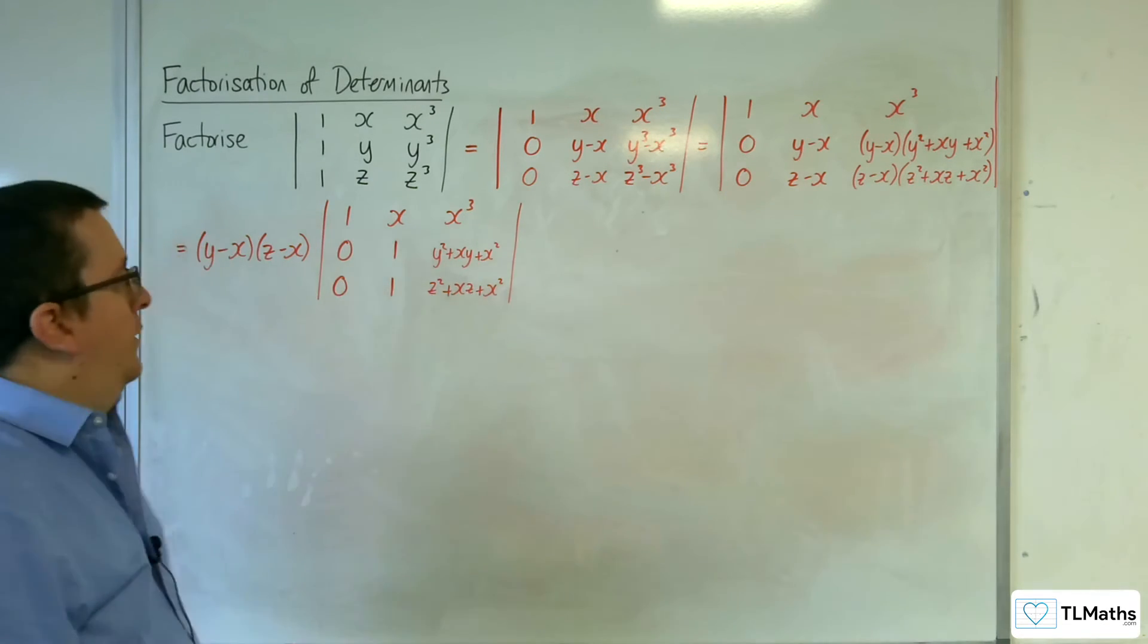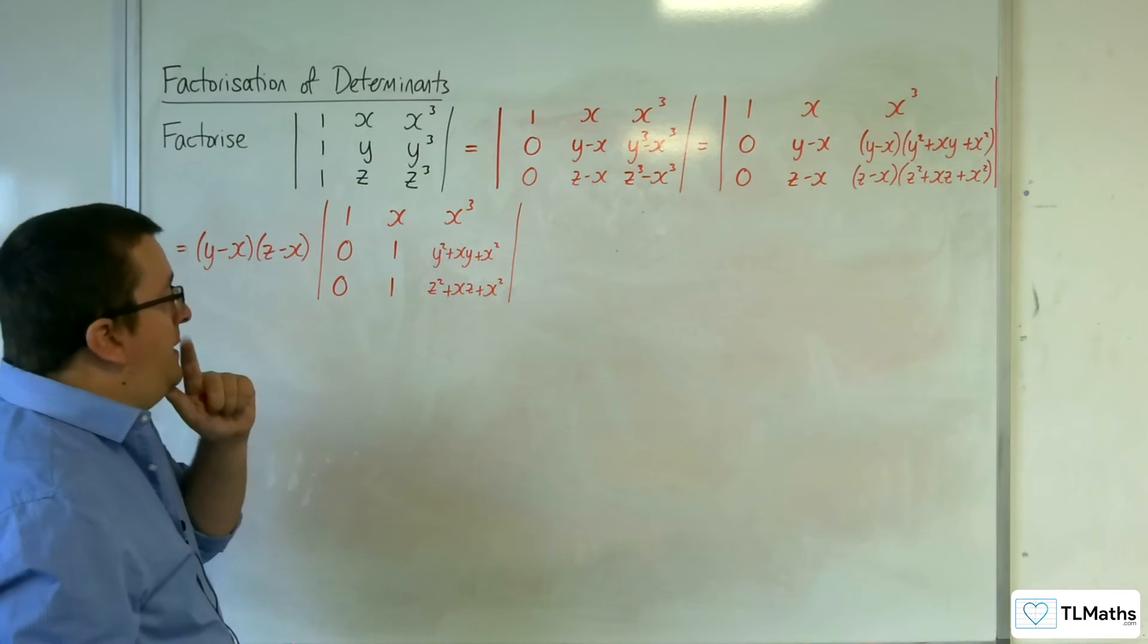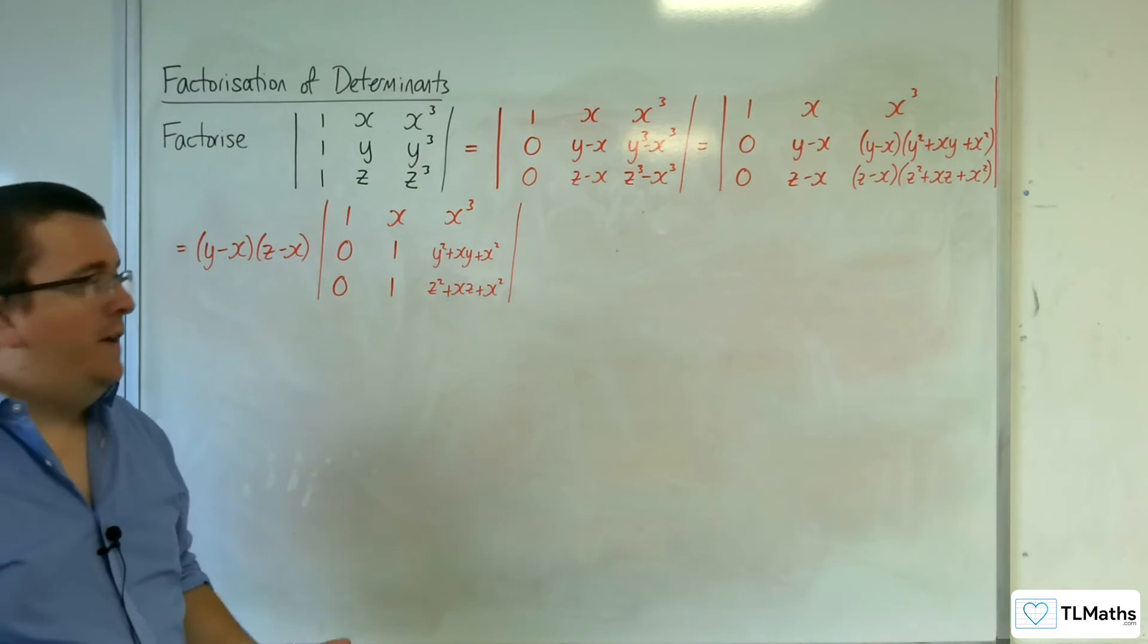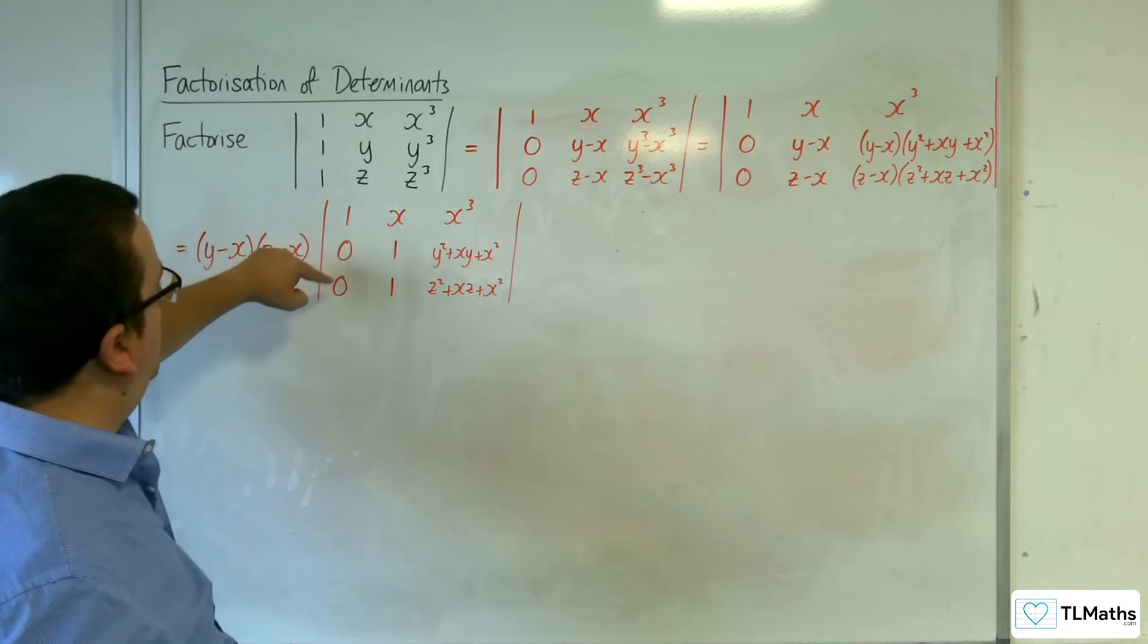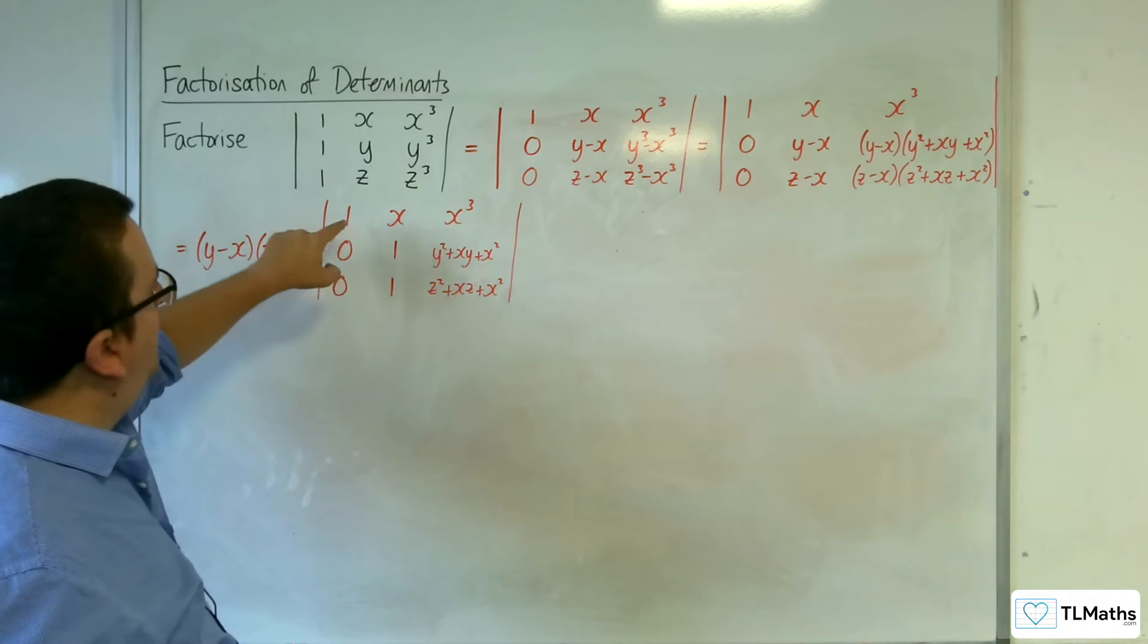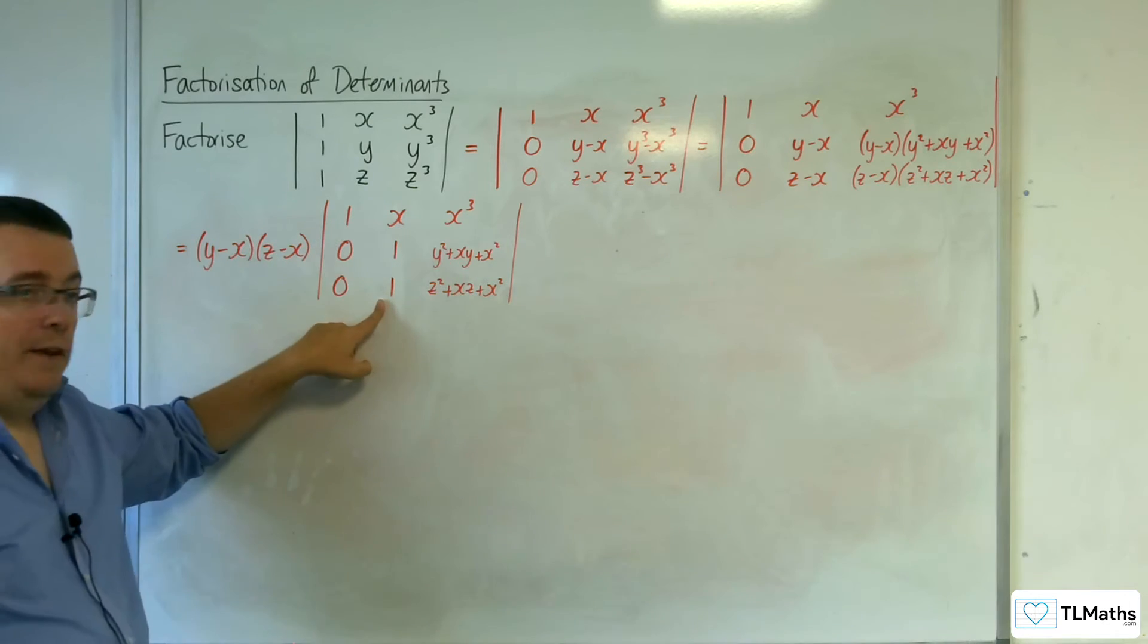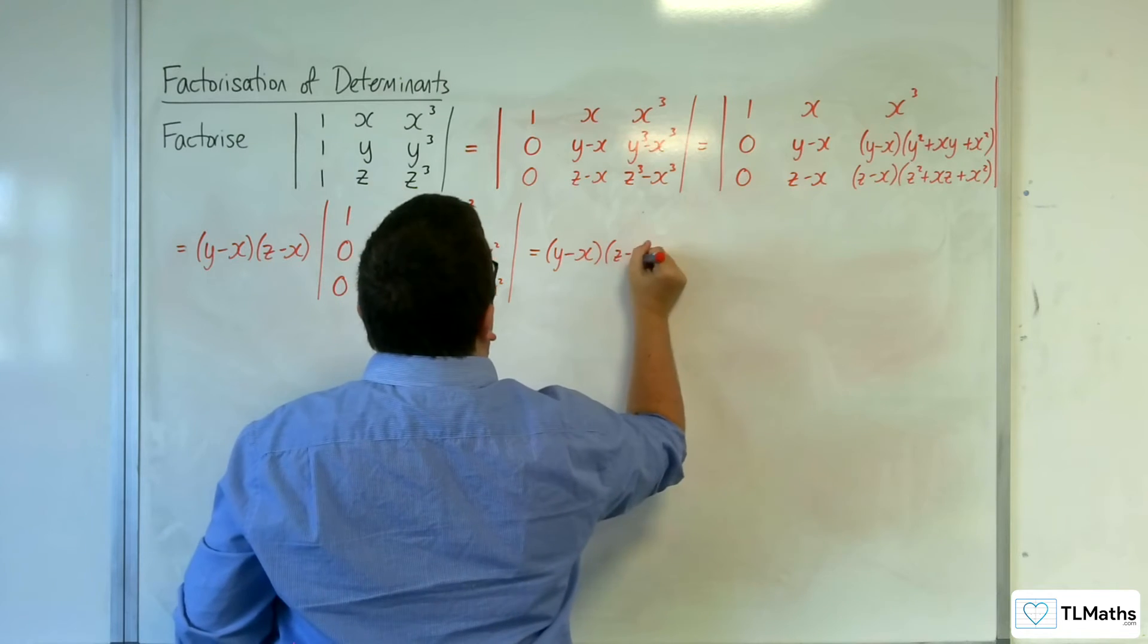And easy to then expand. But, because we've got the 1, the 1 there, I can go a little bit further. So, if I subtract row 2 from row 3, that means I'm going to get this as 0, which makes my life even easier. So, I've got the y take away x, z take away x.